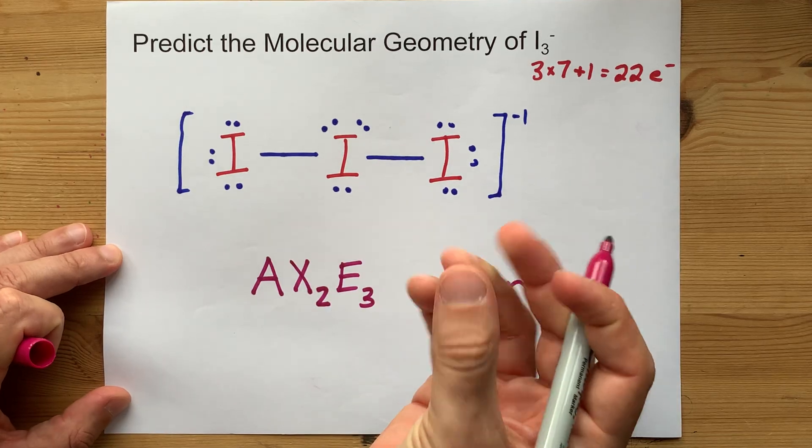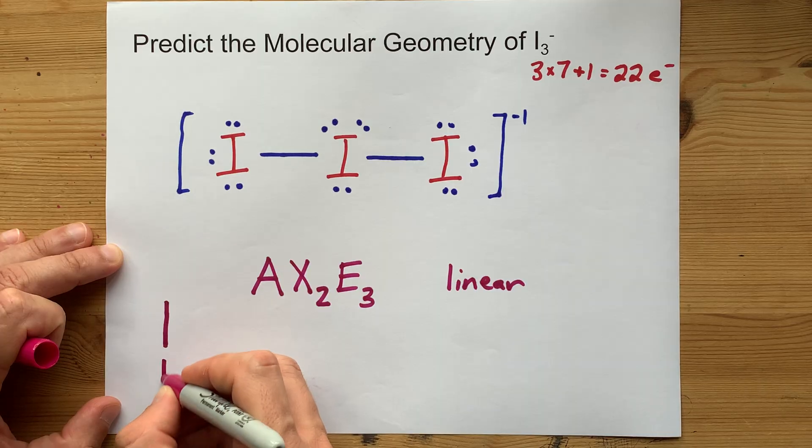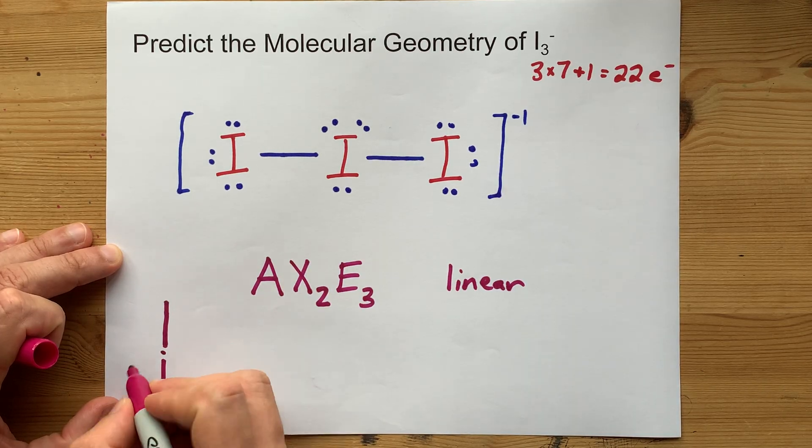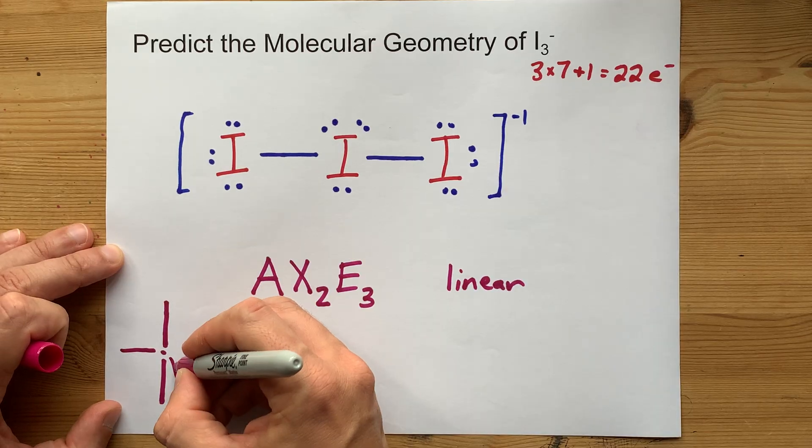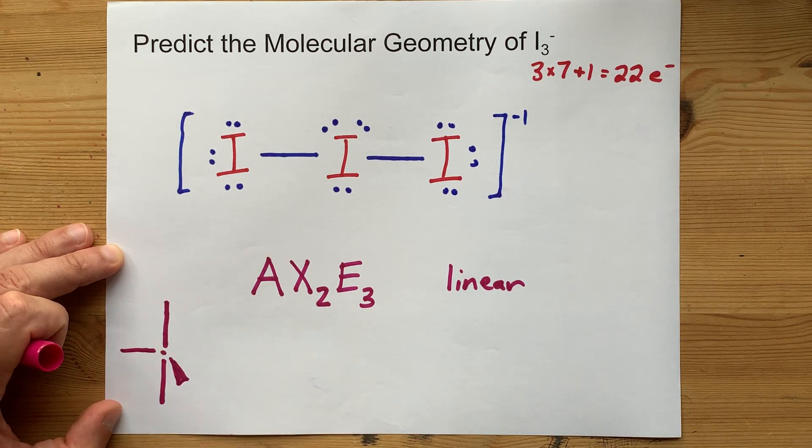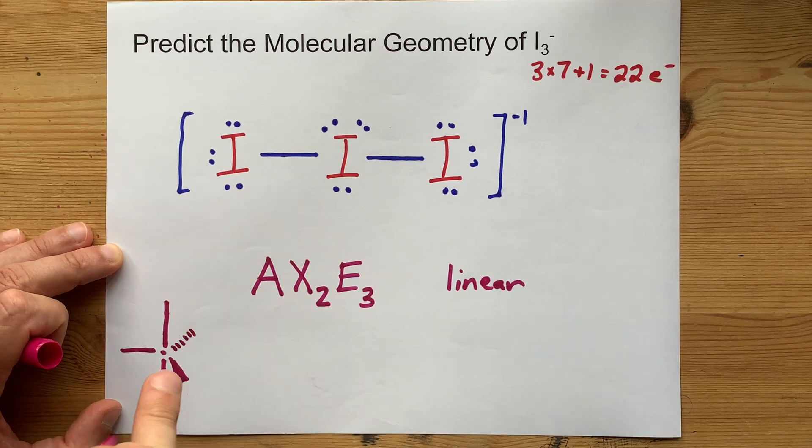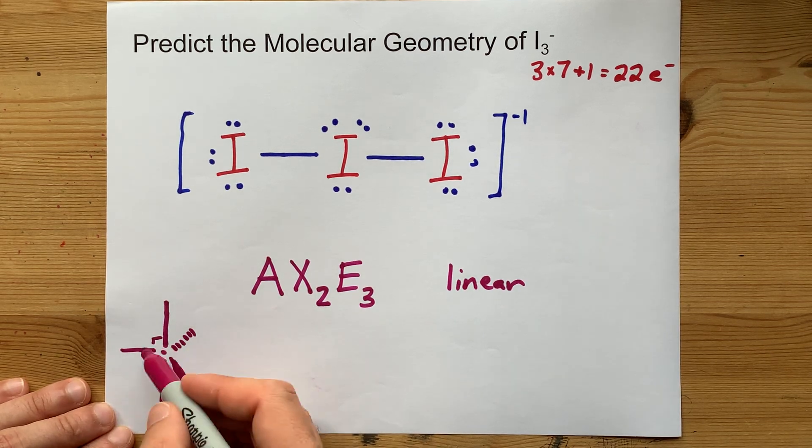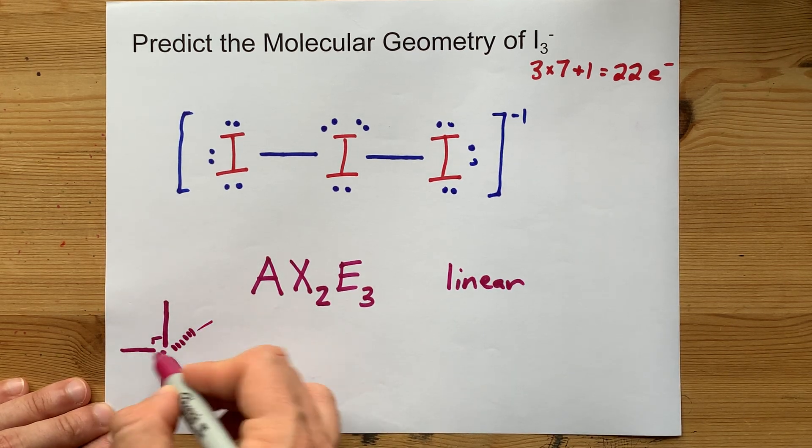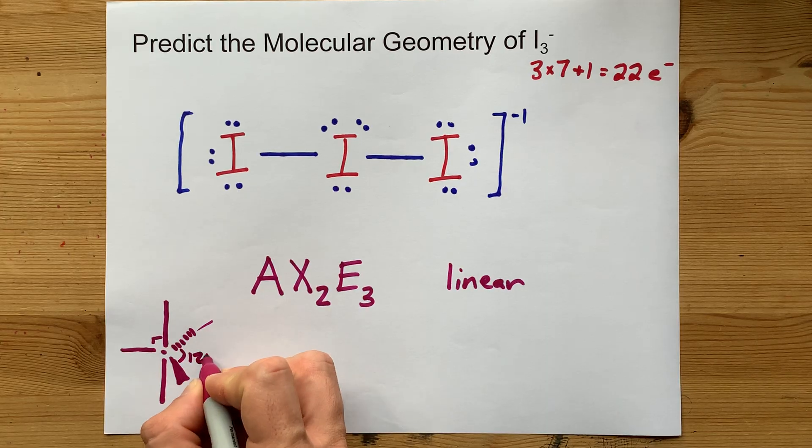The farthest apart that five things can get in three dimensions is one above and one below that center atom, one sticking out to the side, one coming out at you, that's coming out of the page towards you, and one just behind that going into the page or away from you. These are 90 degree angles between each of the three things along the equatorial plane and the up-downs. Then between each of these is 120 degrees.